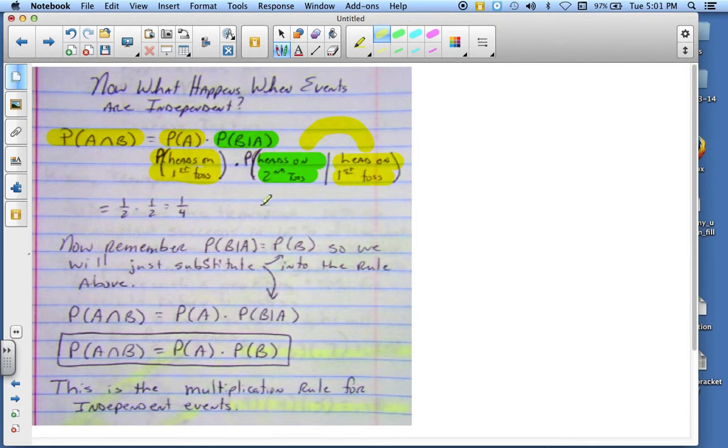So with that being said, remember, we've discussed this prior, that when you have independent events, the probability that B given A is equal to the probability of just B.